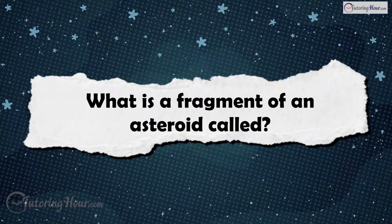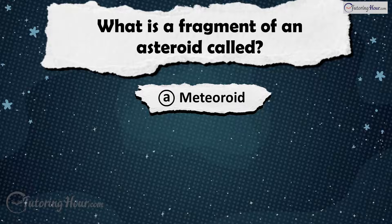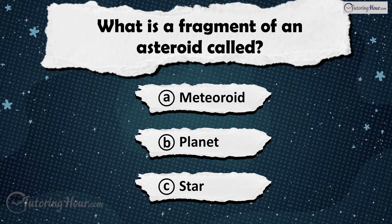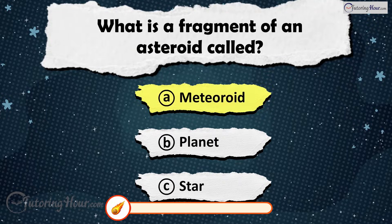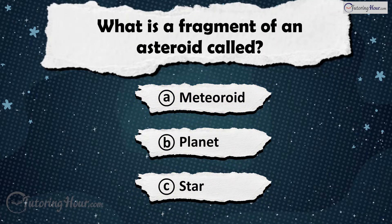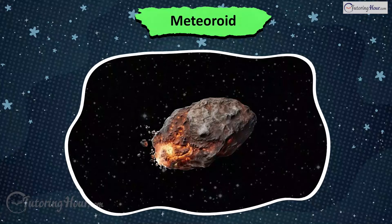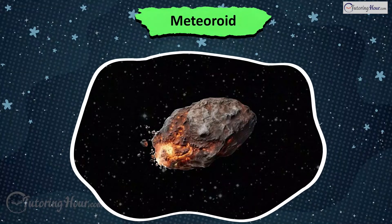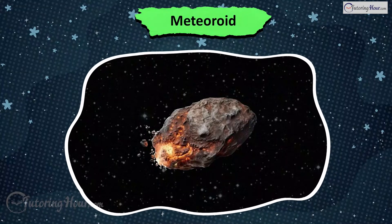What is a fragment of an asteroid called? Is it A) Meteoroid, B) Planet, or C) Star? The answer is Meteoroid. Meteoroids are fragments of asteroids or comets that break off.